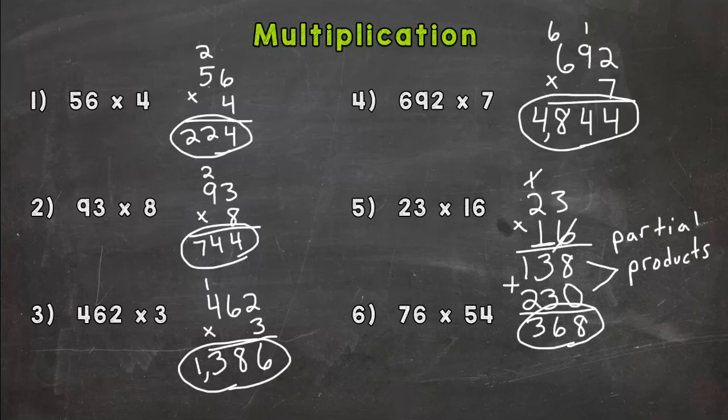So let's do number 6, another 2 by 2. I'm going to come over here to the side where I have more room. So I have 76 times 54. I need to start by taking my 4 to the 6 and 4 to the 7. 4 times 6 is 24, carry the 2. 4 times 7 is 28, plus 2 is 30.